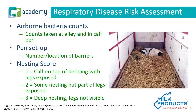The University of Wisconsin conducted in-depth research examining factors that increase respiratory disease risk in pre-weaned calf housing. They looked at airborne bacteria counts taken in the alley and in the calf pen, the types of pen setups and barriers within each pen, and the nesting score. The nesting score was rated on a scale of one to three: one being virtually no bedding, two being intermediate, and three being deep bedding where the calf's legs couldn't be seen when nestled in the straw. This study was conducted in 2006.